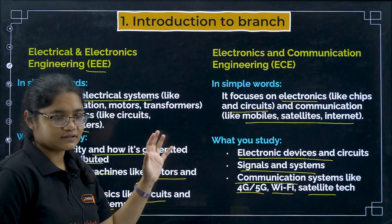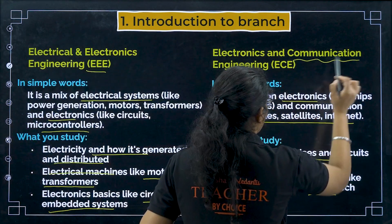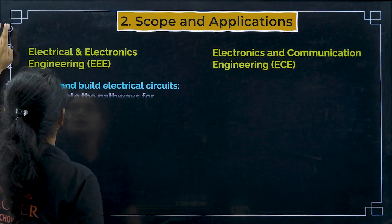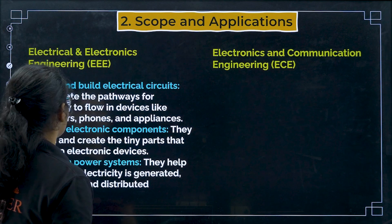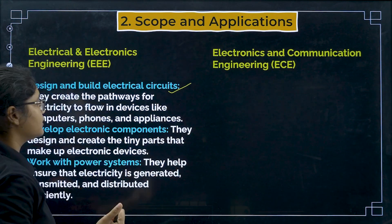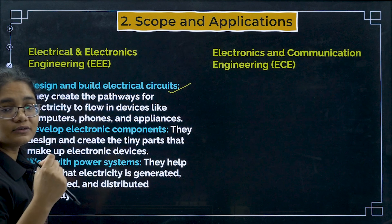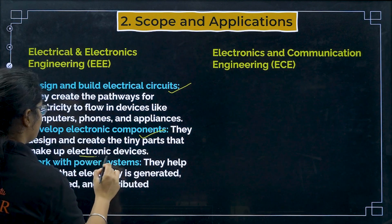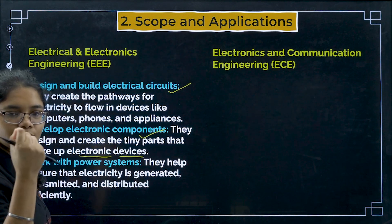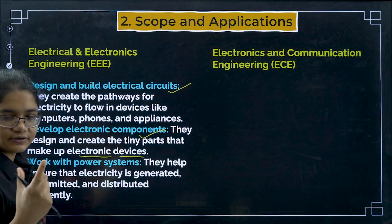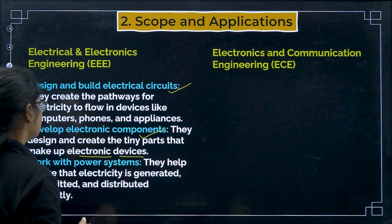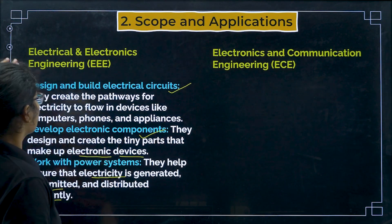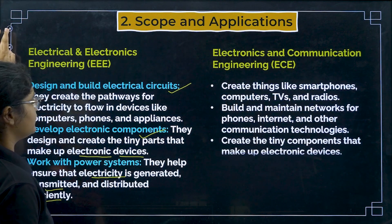The two things that differ between these branches are the communication aspect in ECE and the electrical/power aspect in EEE. Talking about the scope of EEE: you can design and build electrical circuits, develop electronic components like chips and the tiny parts inside big gadgets, and work with power systems — how electricity is generated, transmitted, and distributed efficiently.